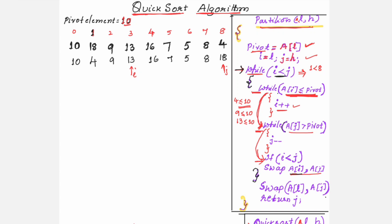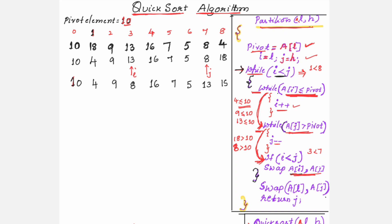Now J points to 8. A of J is 8. Whether 8 is greater than 10? No, condition is false. It executes the if statement: I is 3, J is 7 — 3 less than 7 is true. Swap A of I and A of J: A of I is 13 and A of J is 8, so in place of 13 it will be 8, and in place of 8 it will be 13. The remaining elements stay as they are.